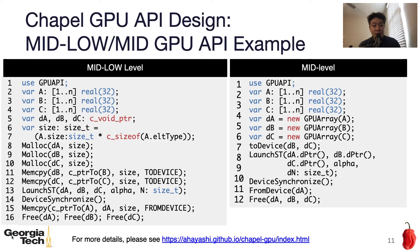What you see here is the medium-low and medium version of a GPU API program. On the left-hand side, you need to manipulate the wrapper API to perform data allocation, data transfer, kernel invocation, and data deallocation, whereas on the right-hand side you can do the same thing in a more Chapel programmer-friendly way. We have detailed documents on the API — if you are interested, please take a look.